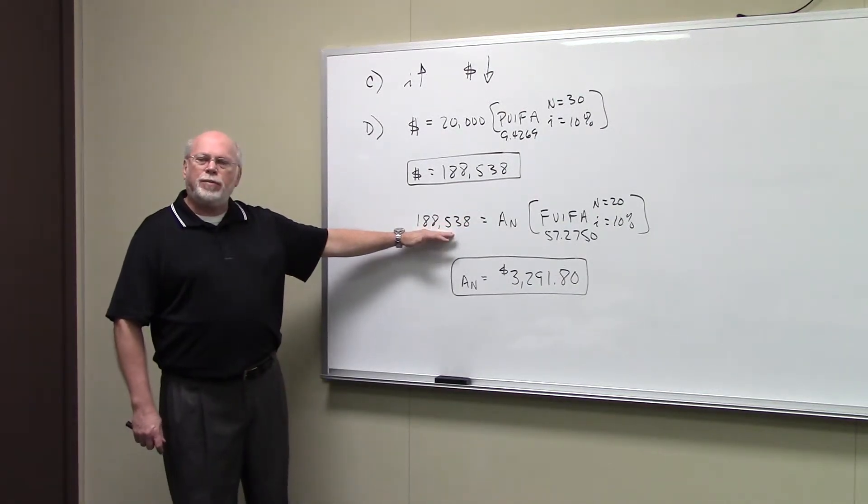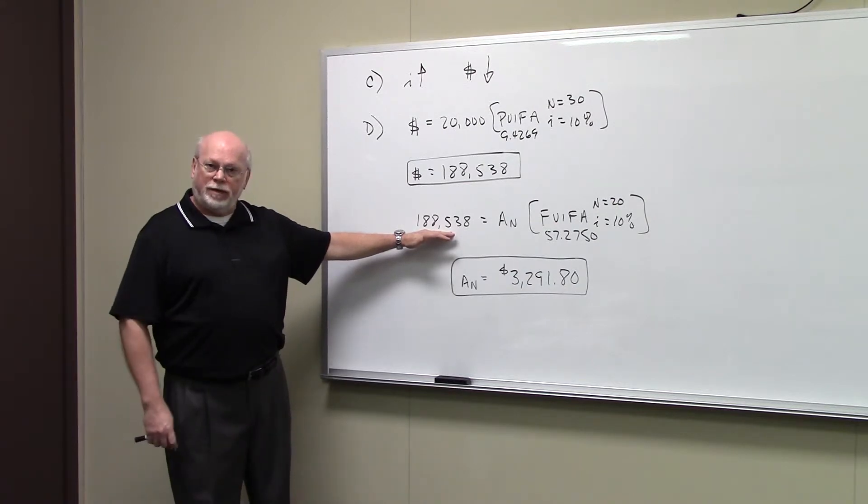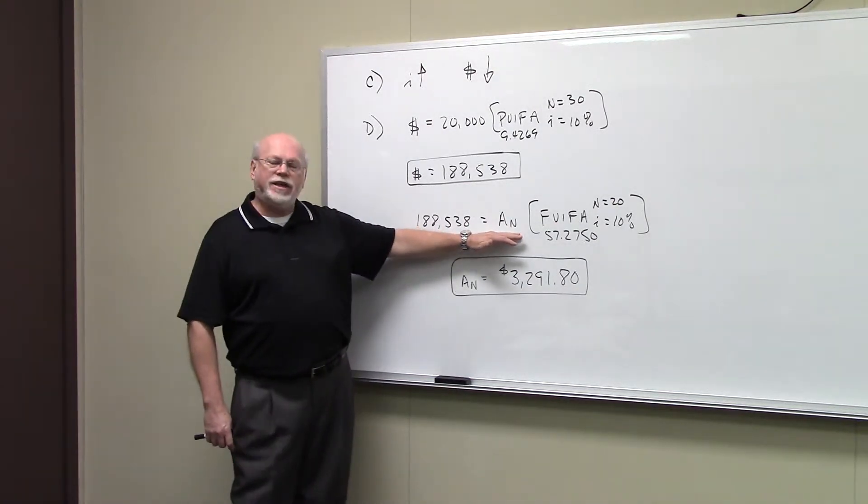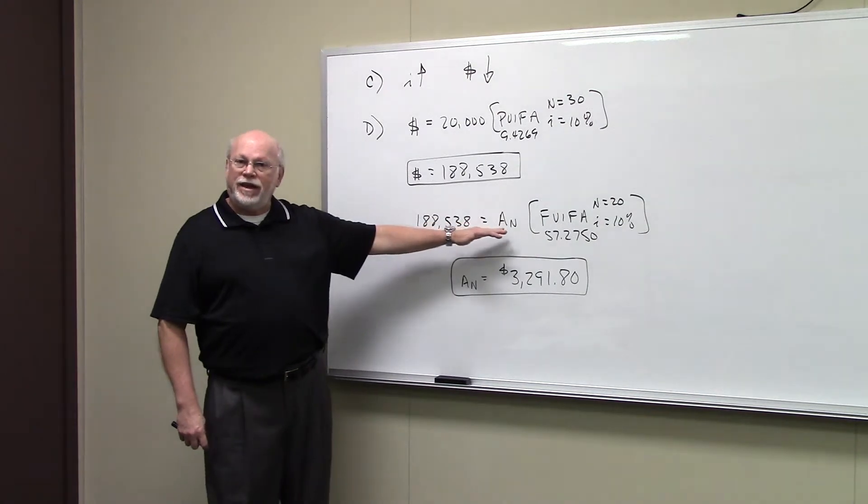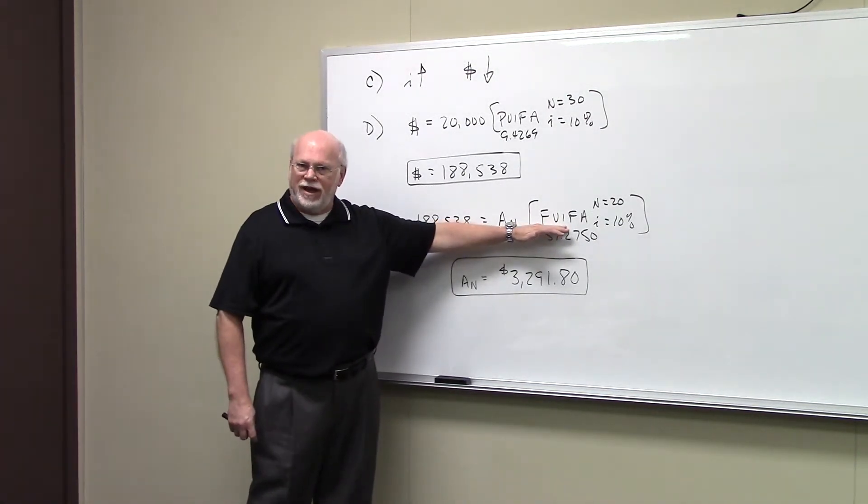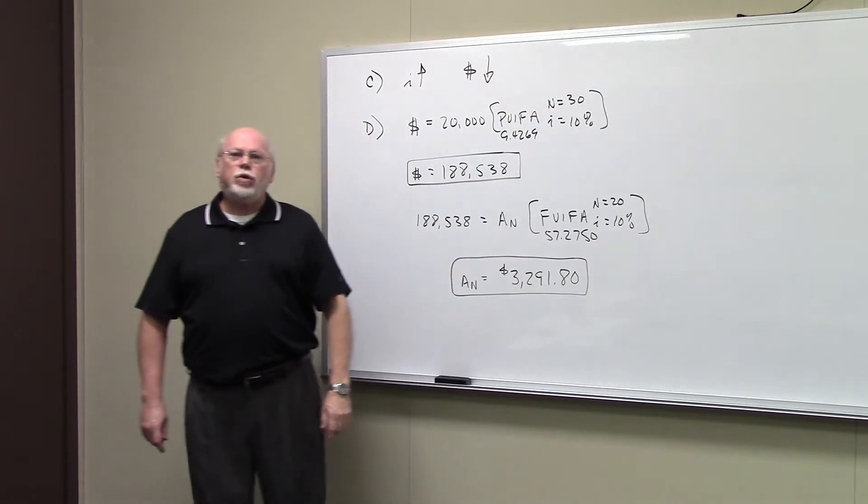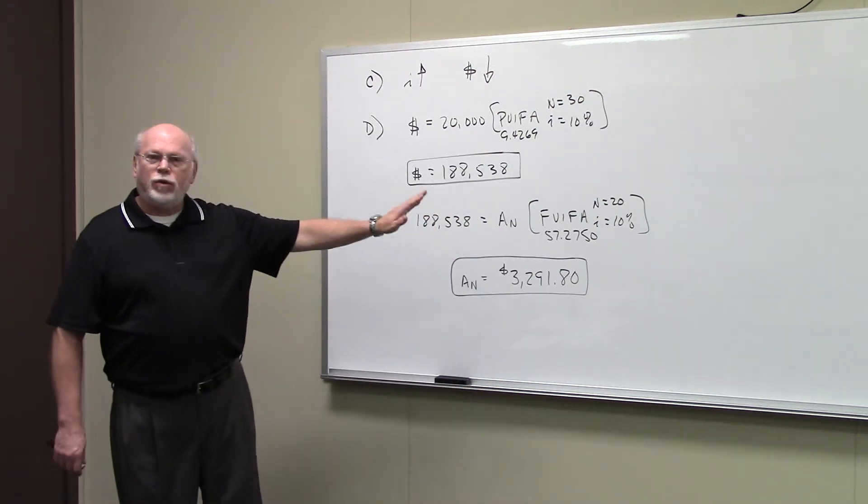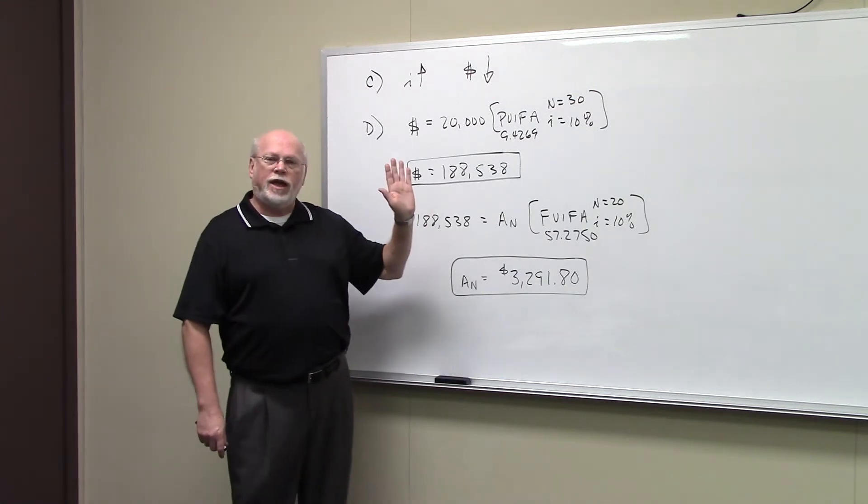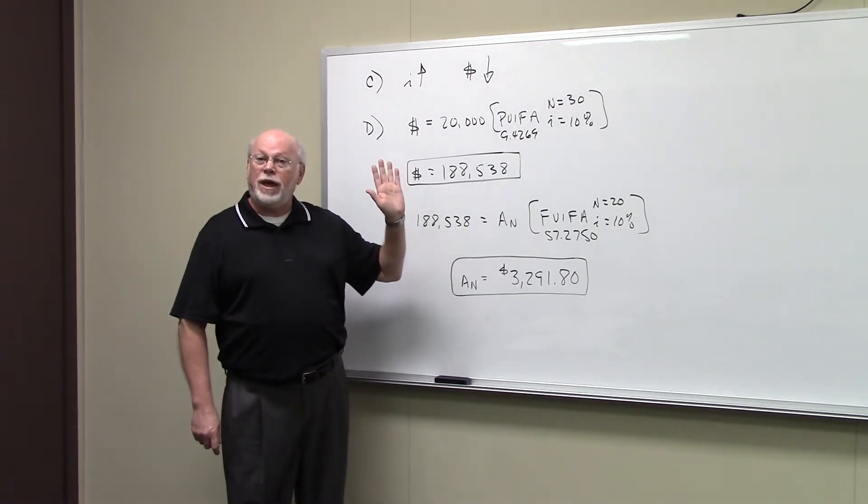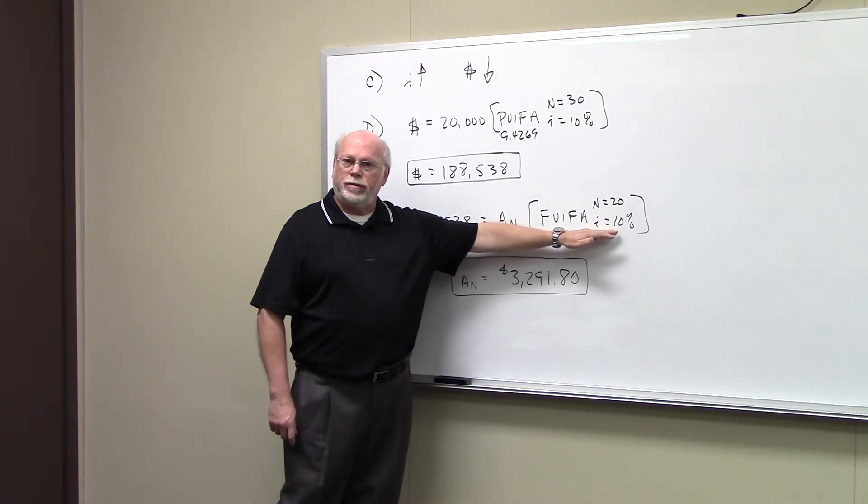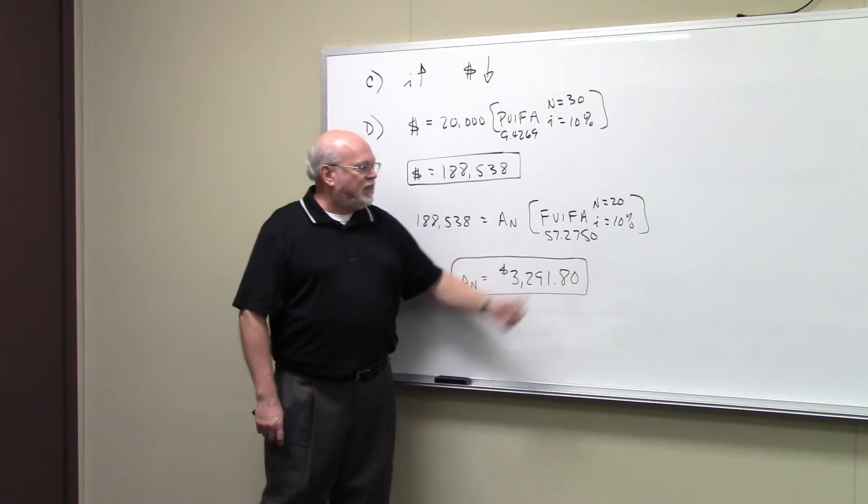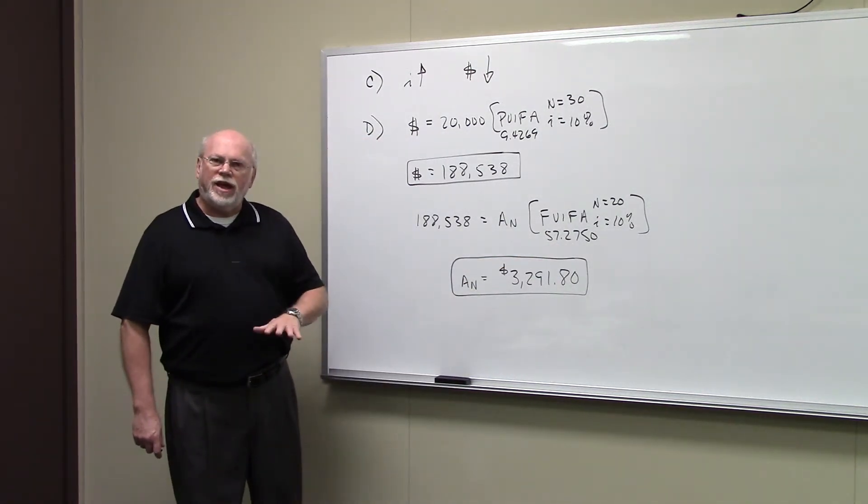In this case, this is the amount of money that we need 20 years from now. And what we're asking is, what annuity would we have to save every year to get to that big dollar amount? The big dollar amount is at the end of the annuity. We're going to use our FVIFA table. You would want to look up your FVIFA with N equal to 20. You're going to work 20 more years. You want to know what your payment has to be every year for 20 years if you earn 10% a year on your money. 57.2750 is your FVIFA.